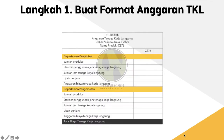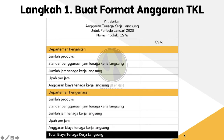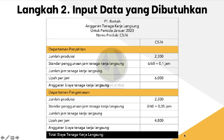Pertama-tama, kita buat dulu format anggaran tenaga kerja langsung untuk memudahkan penyusunannya. Karena ada dua departemen, maka ada dua anggaran tenaga kerja langsung yang nanti akan kita totalkan dalam satu format. Karena produknya hanya satu, maka kolom produknya hanya satu. Langkah kedua, kita input data yang dibutuhkan: jumlah produksi dari anggaran produksi, standar penggunaan jam tenaga kerja langsung yang diperoleh dari 6 menit dibagi 60, sehingga dalam hitungan jam standarnya adalah 0,1 jam, dan upah per jam Departemen Penjahitan adalah Rp6.000.